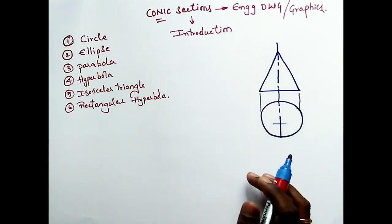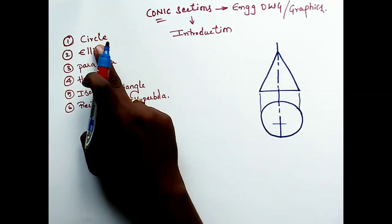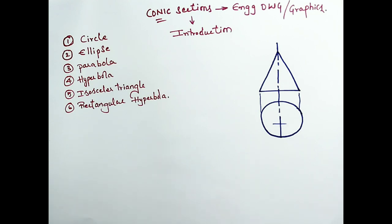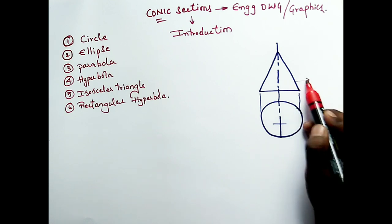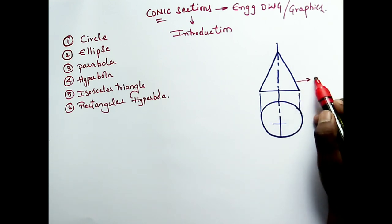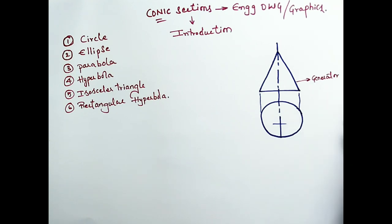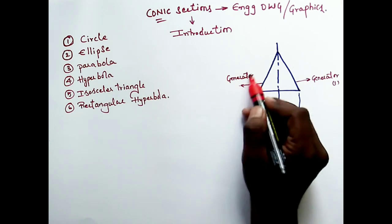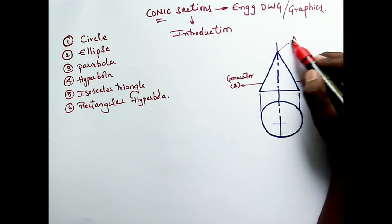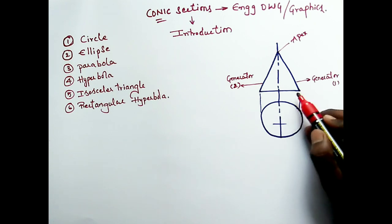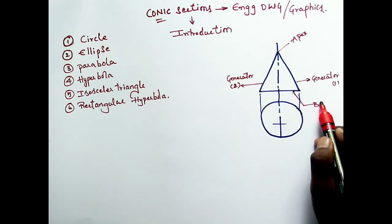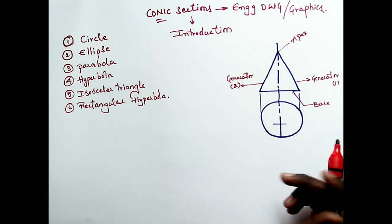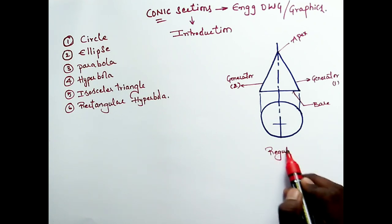From the top view, I can see the circular base. Our intention is to see how to arrive at the conic sections — circle, ellipse, parabola, hyperbola. Let us know the terminology first: this slant side is called generator 1, and this is generator 2. The meeting point of the two generators at the top is called the apex, and the bottom is the base on which the cone rests. This is a right regular cone.